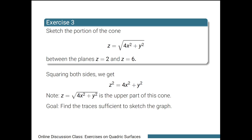To get these traces, we choose an appropriate value to eliminate each term. For the term 4x squared to be 0, we set x equals 0, giving us the plane x equals 0, or the yz plane. For the term y squared to be 0, we set y equals 0, giving us the plane y equals 0, or the xz plane. Lastly, for the term z squared to be 0, we set z equals 0, giving us the plane z equals 0, or the xy plane.